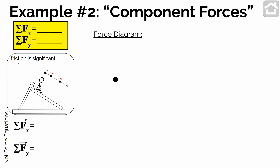Let's say friction is significant and they're increasing speed. What do we know about objects that are increasing speed? If they're moving in a direction and the speed is increasing, we know that the sum of the forces, no matter what forces are on the object, when we add everything up, the sum of the forces has to point in the same direction the object is moving. So we can see that the sum of the forces is parallel to the incline or the slide surface.